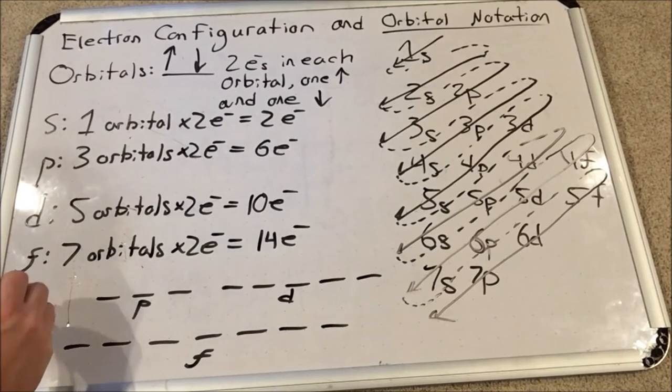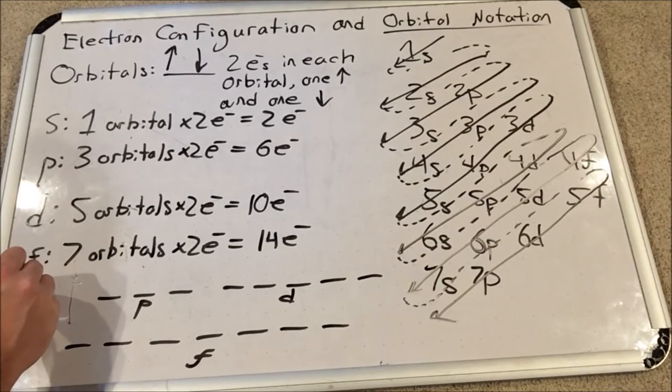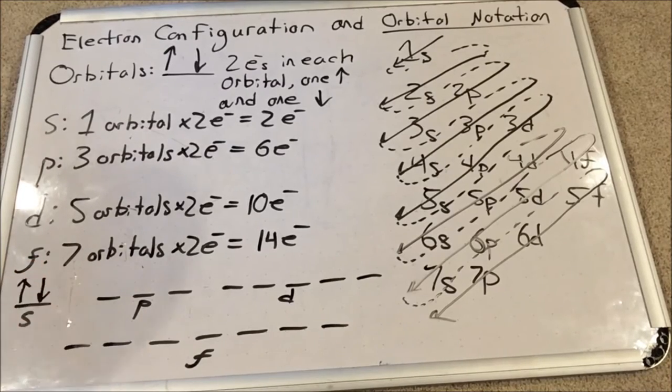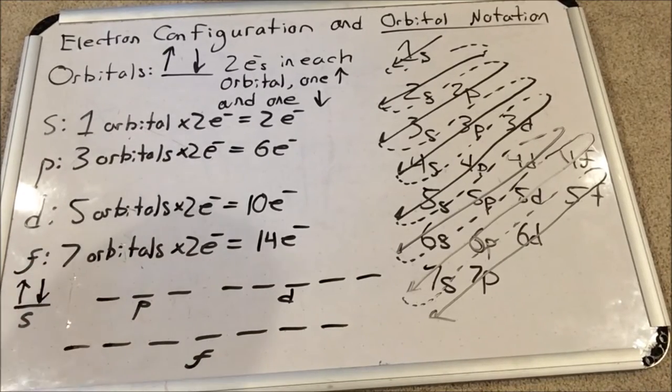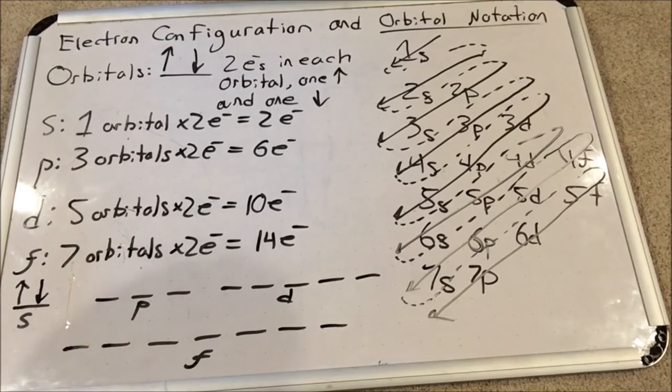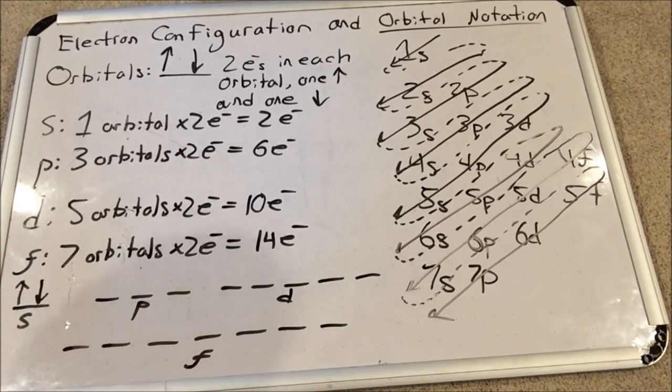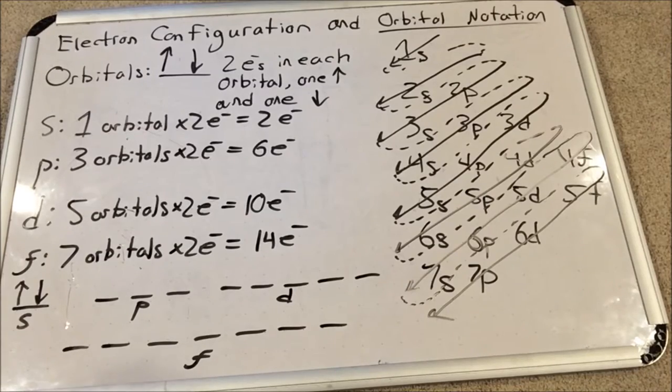We always fill an s sublevel if there's two electrons to fill it, one up first then one down. The p sublevel will put the three orbitals next to each other like this with a small space between them and a larger space between any other sublevel around it.